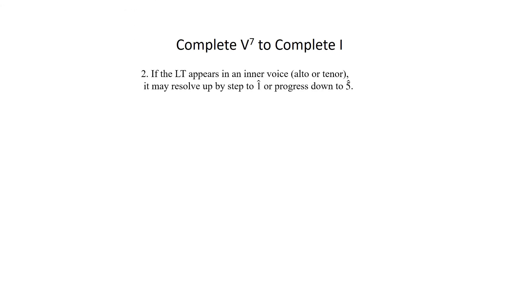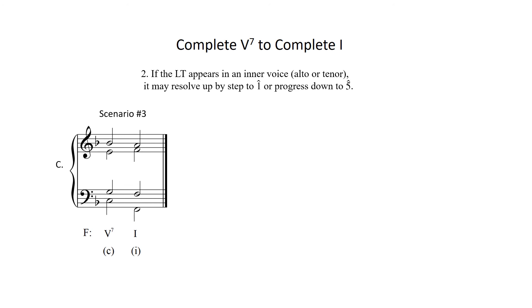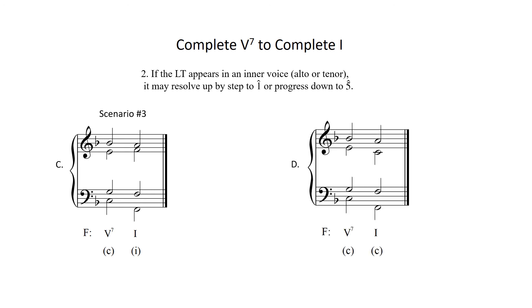Let us return to the option provided in step 2 regarding the leading tone resolution. Example C, the third possibility we just reviewed, shows the leading tone resolving up by step in an inner voice. However, what if the leading tone doesn't resolve up by step, but rather moves down to scale degree 5? This is seen in example D, scenario number 4. Notice that the chordal 5th of the tonic triad is no longer omitted, and we are left with a complete tonic triad with the familiar voicing of a doubled chordal root.